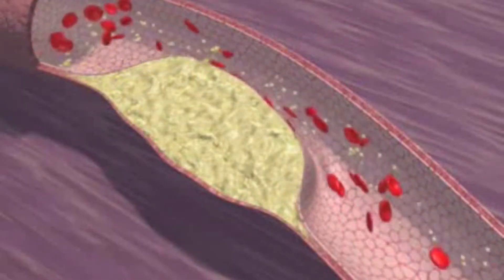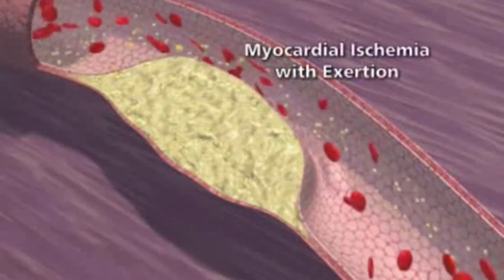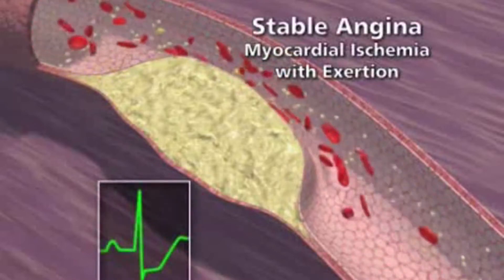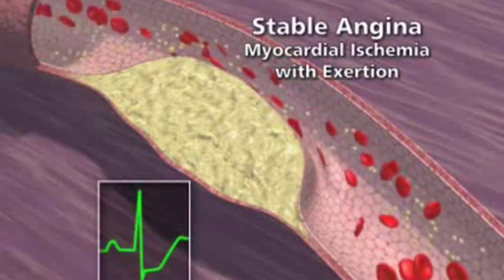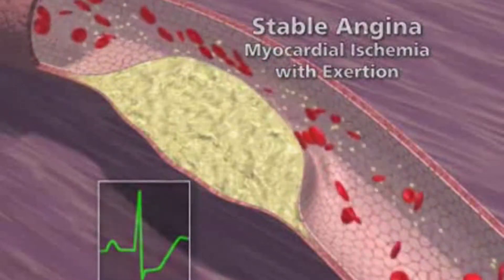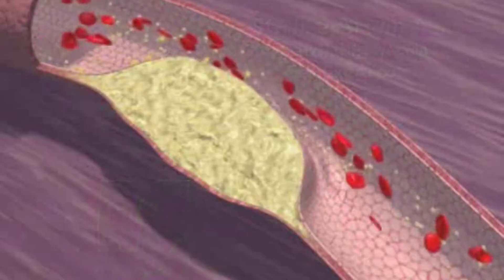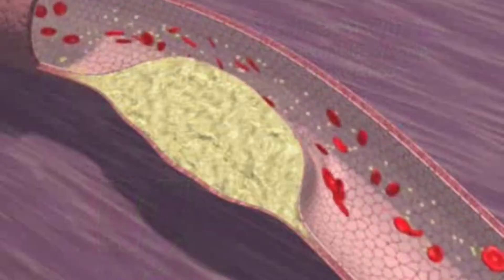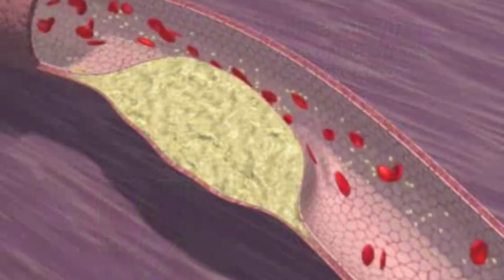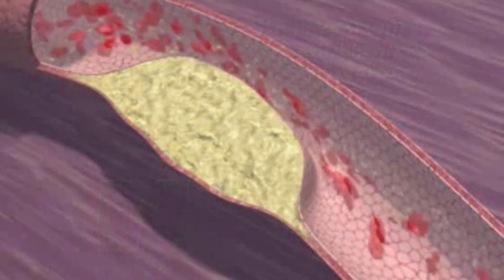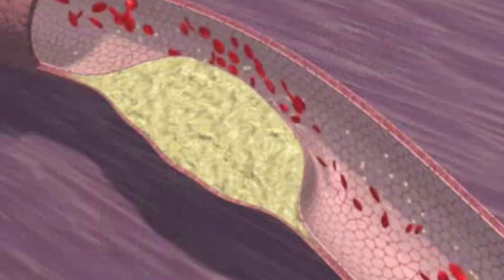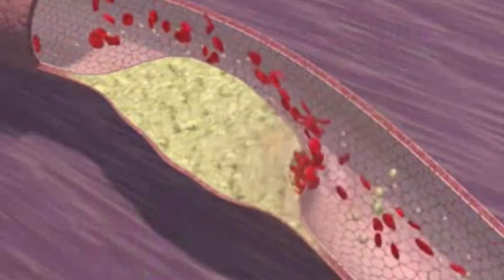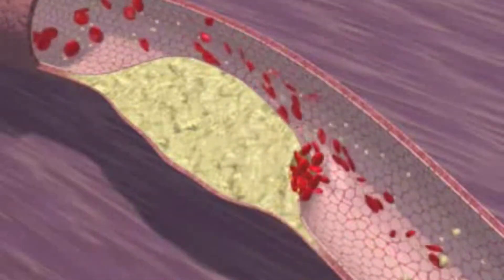This syndrome is known as stable angina and is not a clinical emergency. Such a patient is still at risk for an acute life-threatening event, because a plaque can suddenly rupture, causing clotting of the artery known as coronary thrombosis.